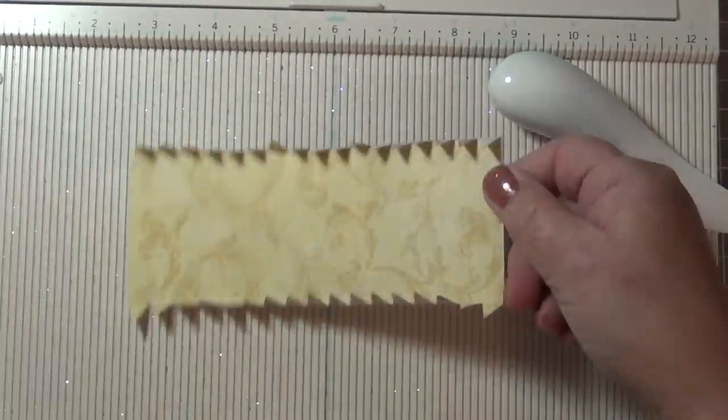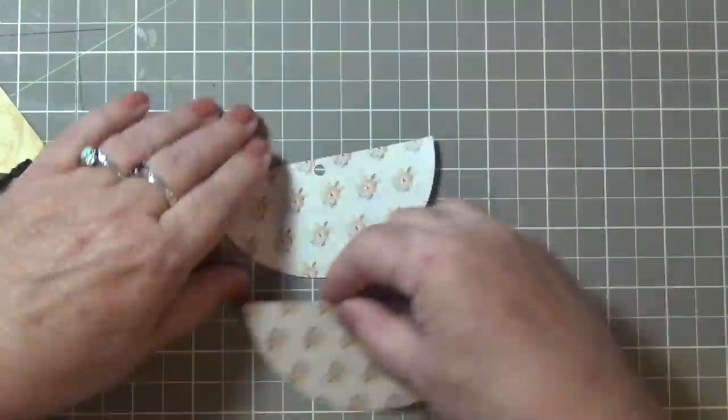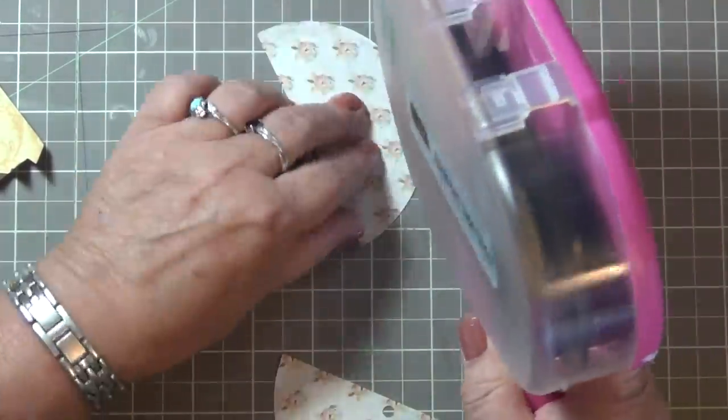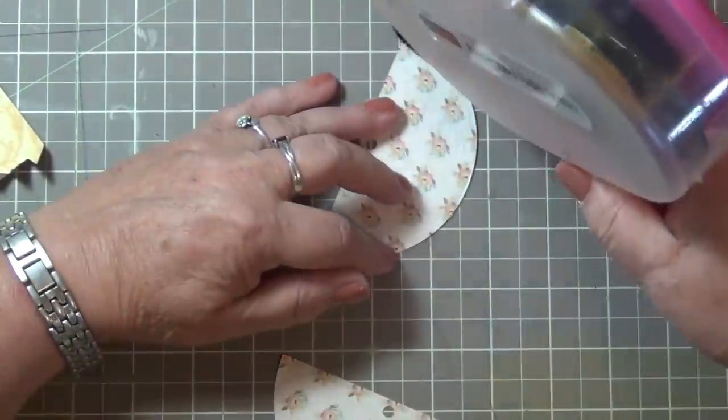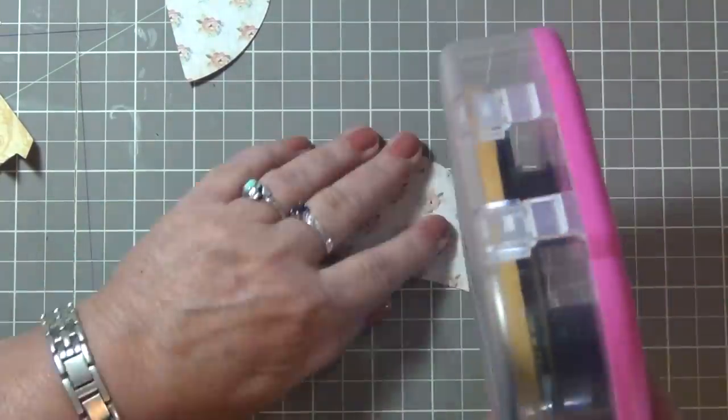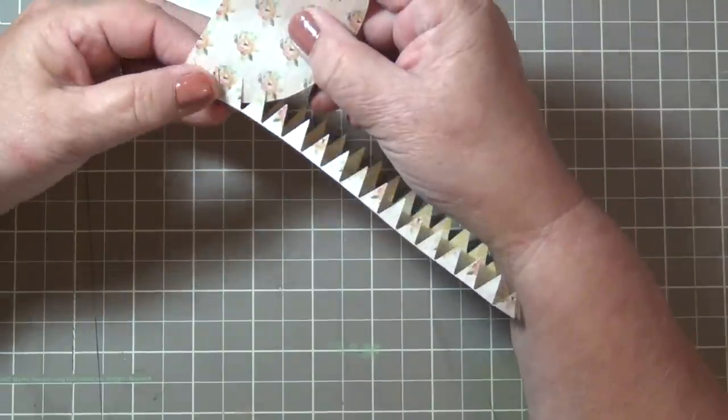And then you're going to fold the score lines so all the triangles are facing up. Give it a little bending to give it some help. Now I'm going to use my ATG gun to put adhesive along the edge of the semicircles.